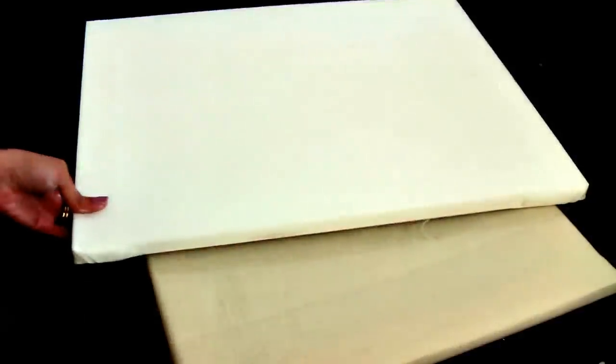Here I'm showing the difference between a primed canvas and a canvas that isn't primed. The one that is primed, the white one, is sealed and ready to be painted on with acrylics or oils.